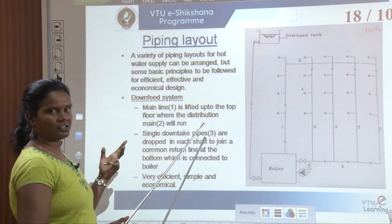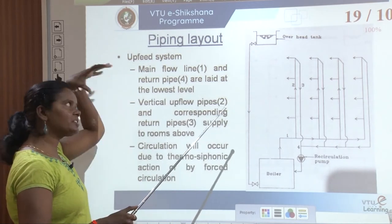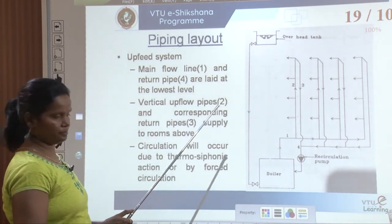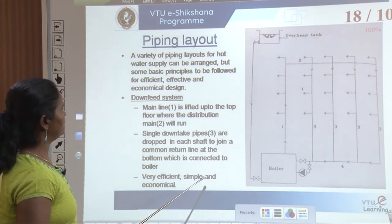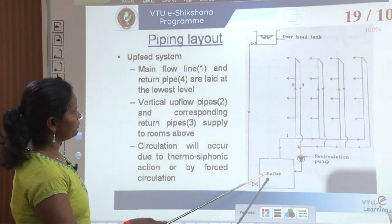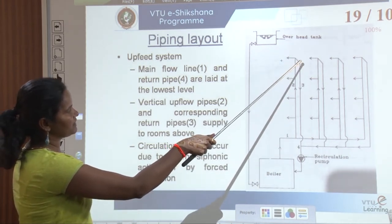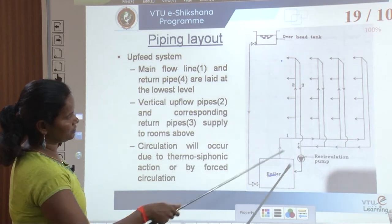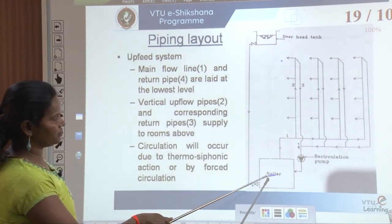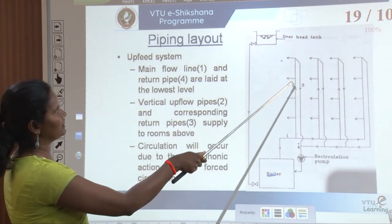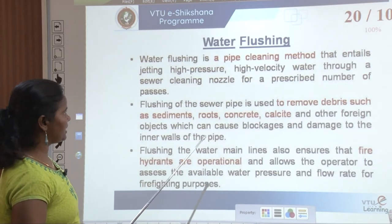There are two different ways of circulating hot water: down feed system and up feed system — depending on whether the storage is at the top or bottom of the building. In the down feed system, the boiler supplies water connected to upper floors and it is recirculated through reverse piping back to the boiler, and again flows up — up feed and then down feed.